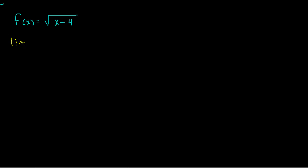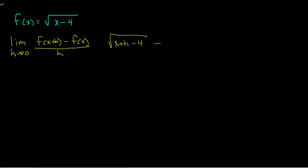Another function this time. Same formula: the limit as h approaches 0 of f of x plus h minus f of x, all divided by h. I just have to apply it. Plugging in x plus h, I get the square root of x plus h minus 4, minus f of x, which is the square root of x minus 4, all divided by h.